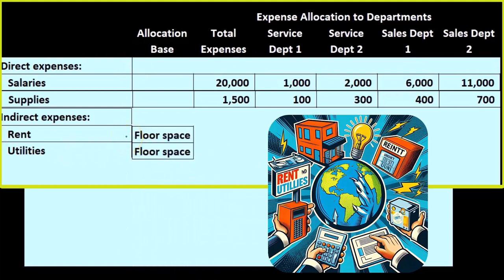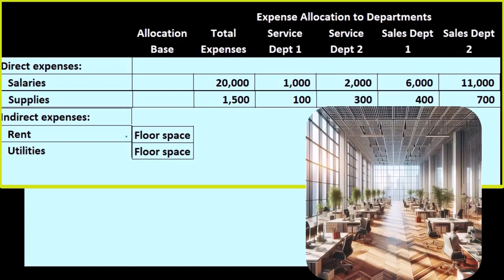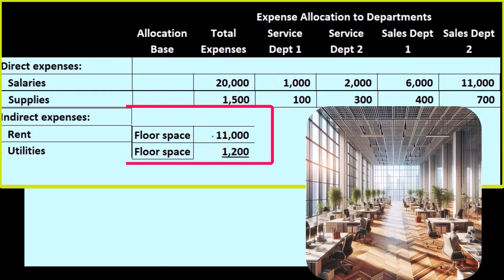A common example for rent and utilities would be floor space — we can look at the square footage of each department in comparison to the total to get that ratio to allocate out. We know what the totals are: 11,000 and 1,200. That's what we know; what we don't know is how to break them out into these four departments.